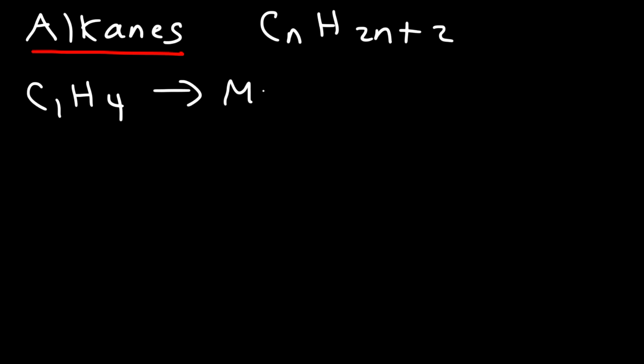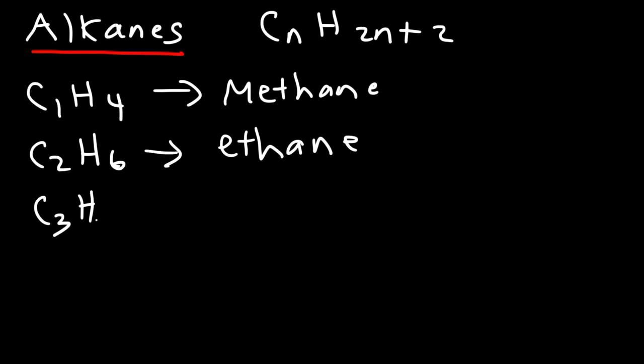Now let's talk about the alkanes. The saturated hydrocarbons. The general formula for an alkane is CnH2n plus 2. So the first example is C1H4, this is known as methane. Next we have C2H6 and this is called ethane. C3H8, this is propane. Now in most organic chemistry classes, you need to know the first 10, so up to C10.